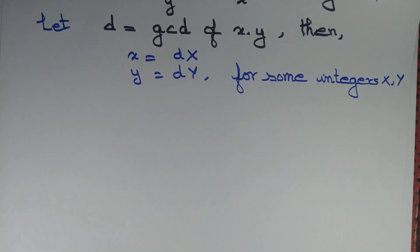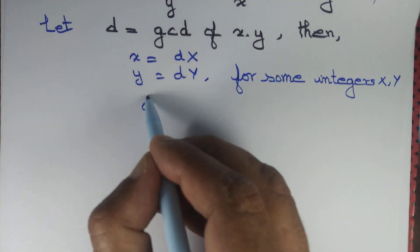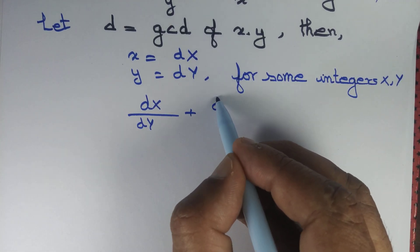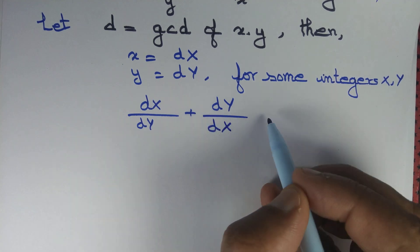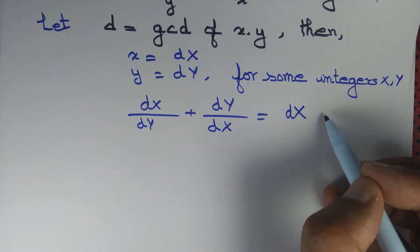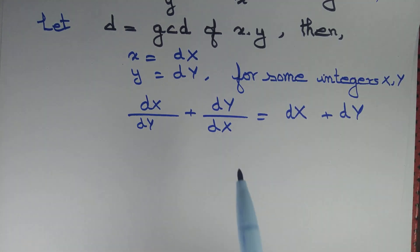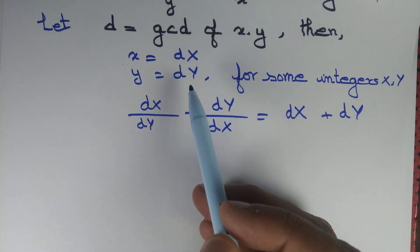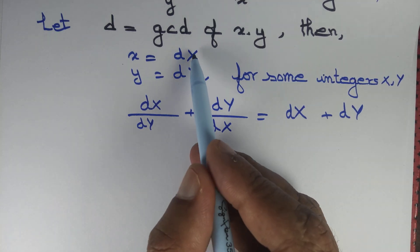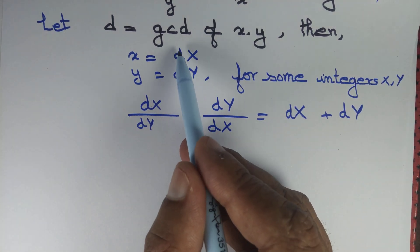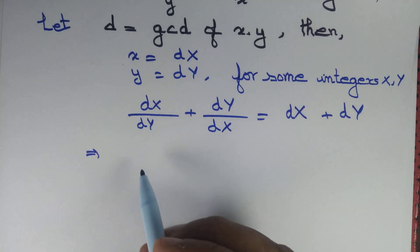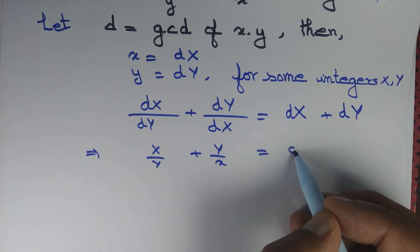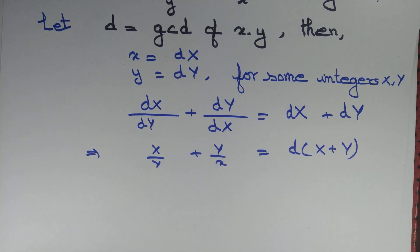Let this denote equation 1. Let's substitute x = dX and y = dY in equation 1. Now observe that since d is the greatest common factor of x and y, capital X and capital Y do not have anything in common, because if they did, that would simply be absorbed by d. We cancel d out and we have X/Y + Y/X = d(X + Y).